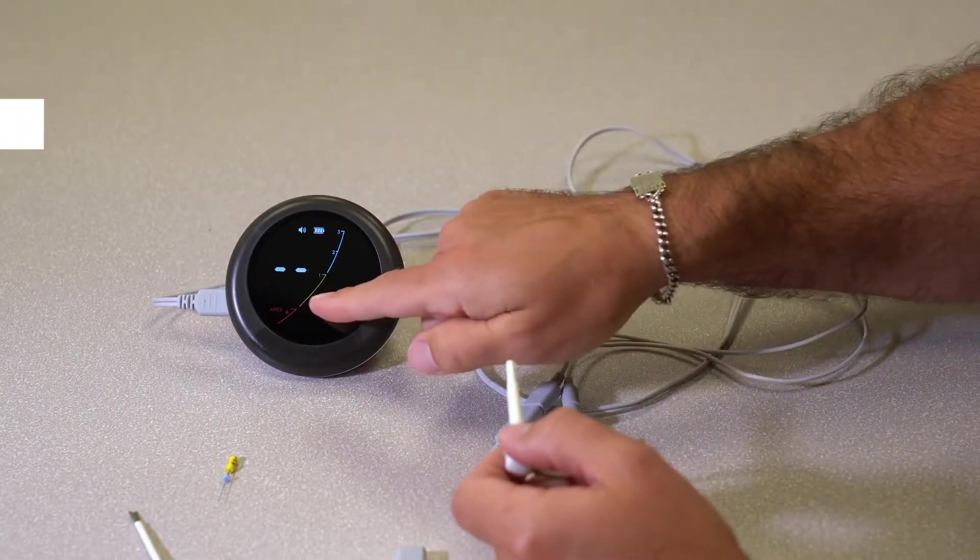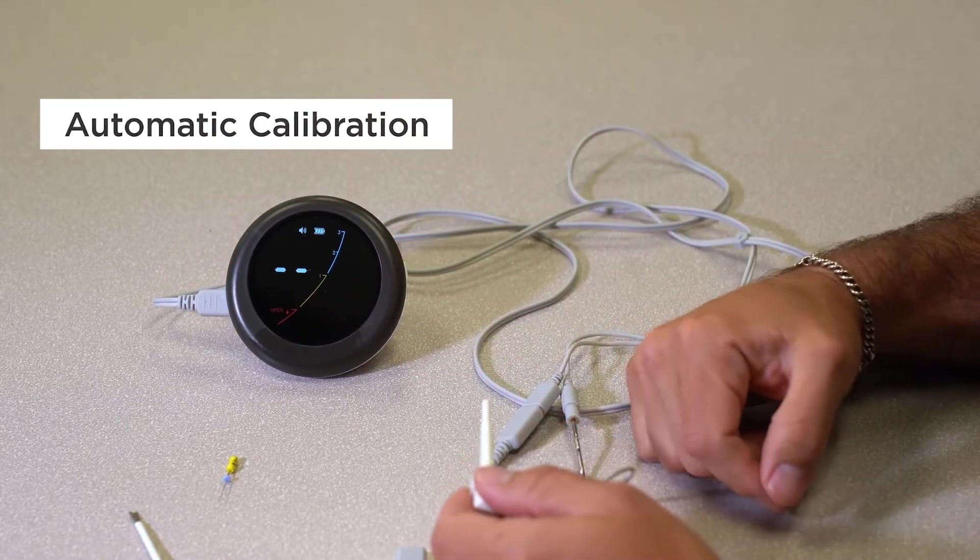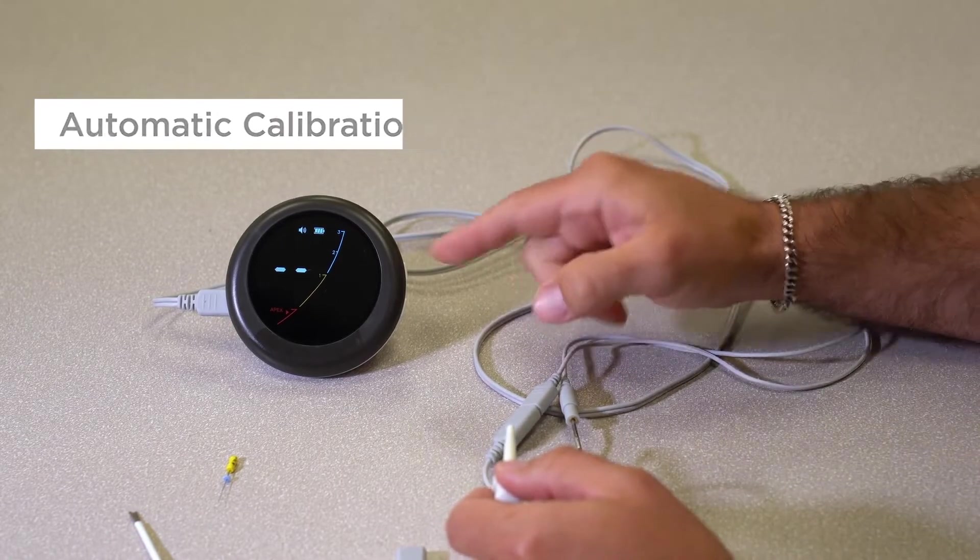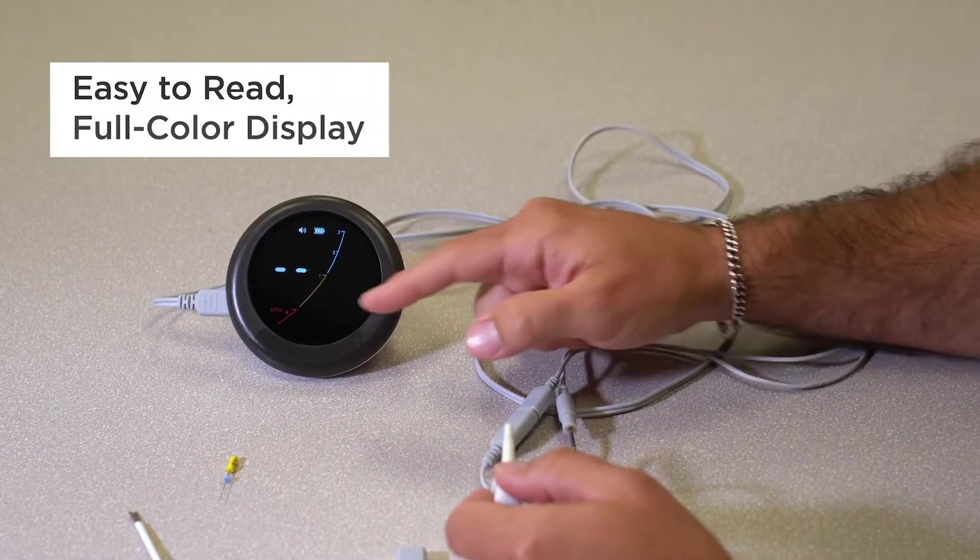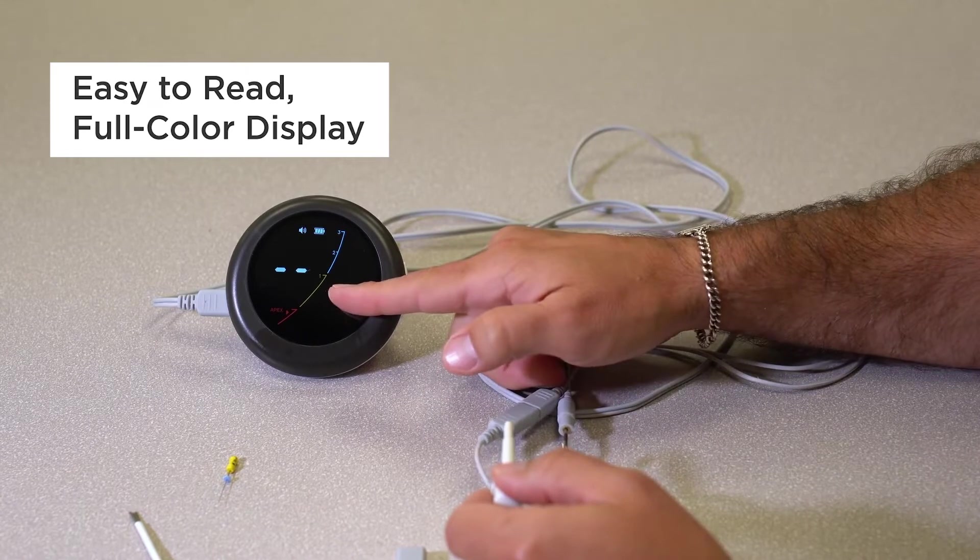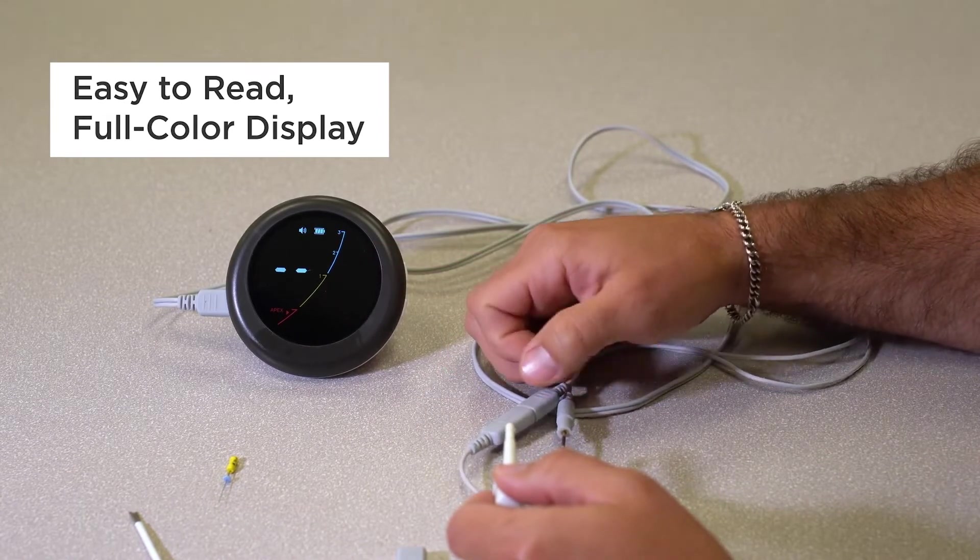When I turn the unit on, the CAL that just flashed means it calibrates itself immediately. So there is no calibration to this. You've got a nice bright display: red when you're at your apex, yellow when you're close, blue when you're outside.